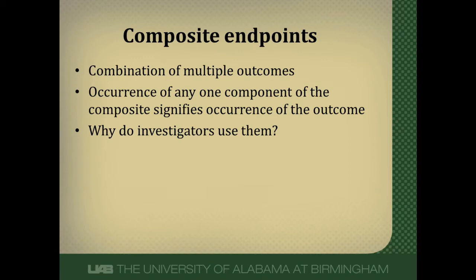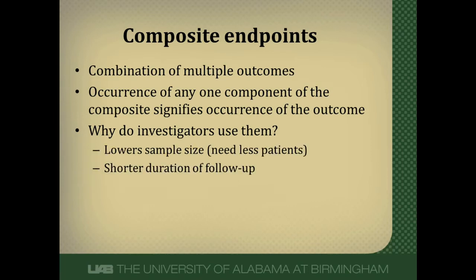As medical therapy has improved, the risk of having any outcome has reduced over time. This means investigators have to follow more people for longer periods of time to get enough events in a study. The TIME trial had three individual components of the composite — it's much more likely that a patient will have one of three things than just one alone. So composites allow investigators to use fewer people and shorter durations of follow-up, making trials more efficient and cost effective.